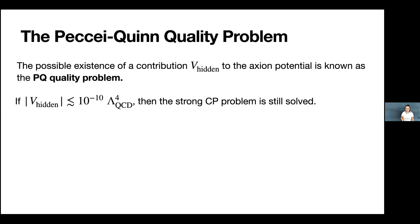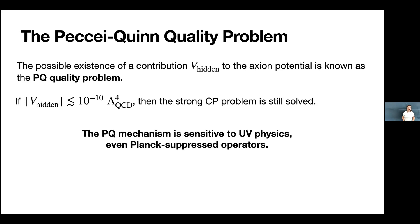If there's something else that contributes to the QCD axion potential, then the minimum of the potential might shift outside of the experimentally allowed range. This possibility of a term V_hidden in the axion potential is known as the Peccei-Quinn quality problem. If V_hidden is less than 10^{-10} lambda_QCD^4, the strong CP problem is still solved; if it's bigger, you've ruined the Peccei-Quinn mechanism. The PQ mechanism is sensitive to UV physics, even Planck-suppressed operators—so we've traded one hierarchy problem for another.